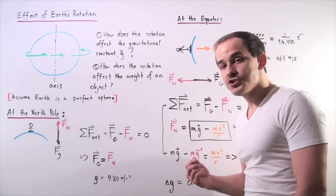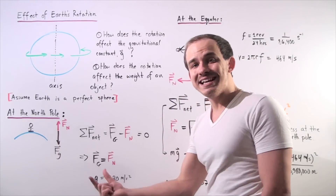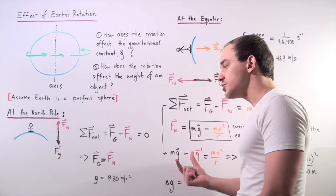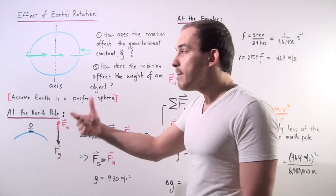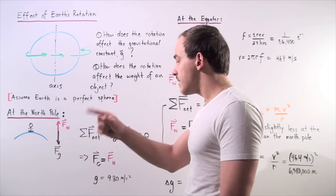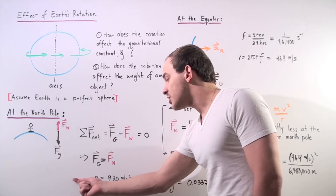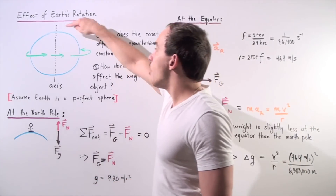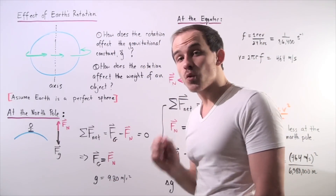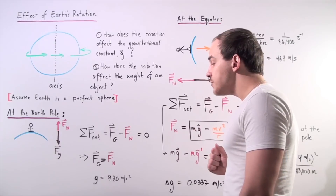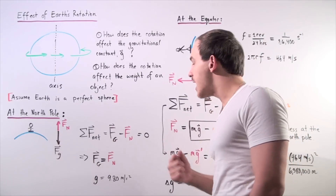Rearranging, we find that the gravitational force is equal to the normal force: mg = mg. The masses cancel out, and g equals g. So the gravitational constant at the poles is simply 9.80 meters per second squared, and the weight of the object at the poles is simply m times g.